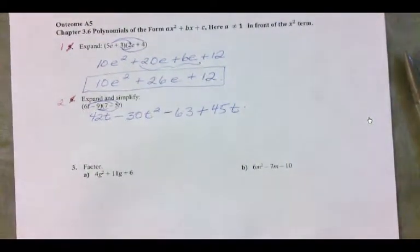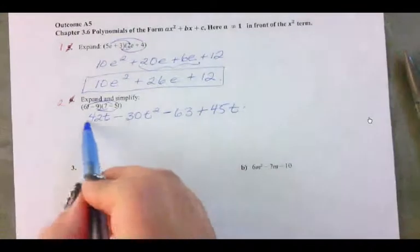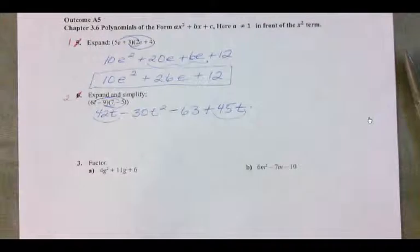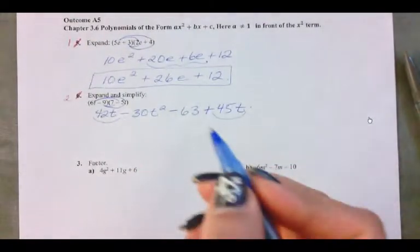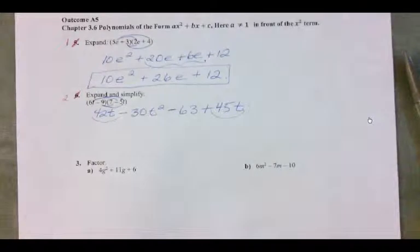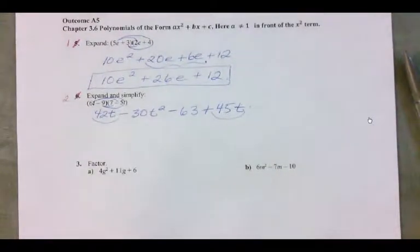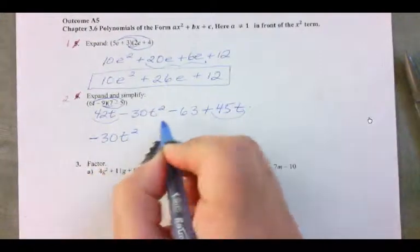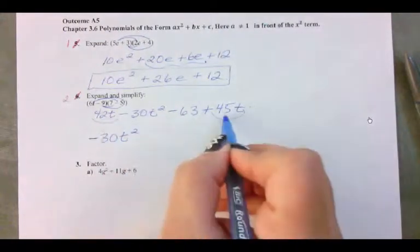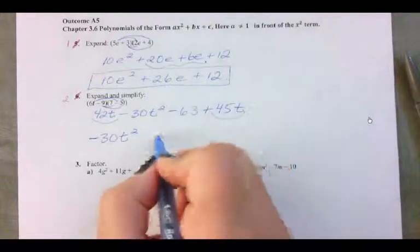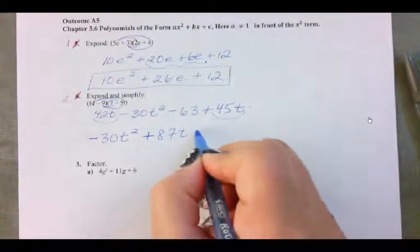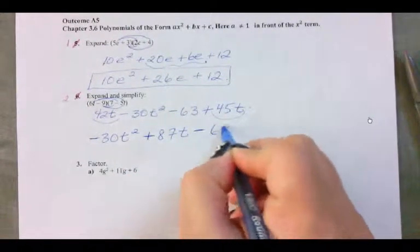You have to take a little bit of extra care here and notice that a term with a t is here and a term with a t is here, so that's what we're going to be combining. We could also rearrange it so we have our t squared term written first. So the t squared term is negative 30t squared. Combining our t's, 42 and 45 together gives us plus 87t. And then we have negative 63.